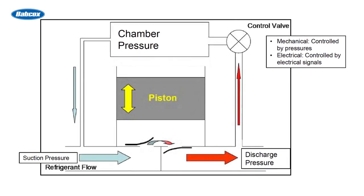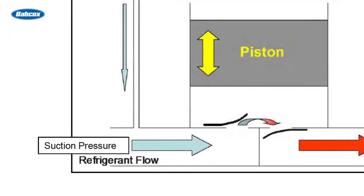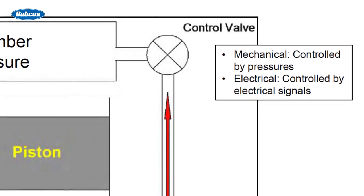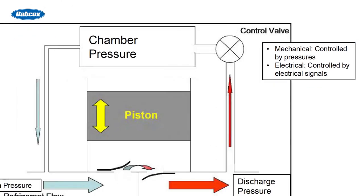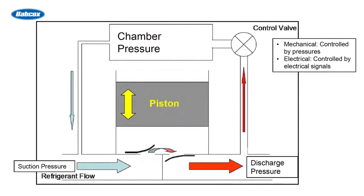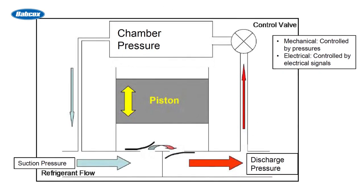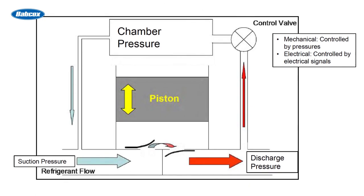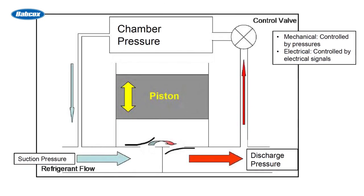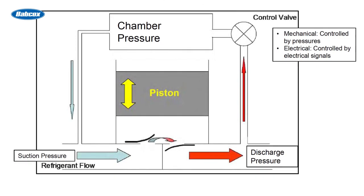The chamber pressure inside the compressor plays a key role in determining the displacement of refrigerant. Chamber pressure applies pressure to the piston tops, while suction pressure applies pressure to the piston bottoms. A control valve regulates the discharge gas channeled into the chamber, while a small bleed back to the suction side allows flow through the chamber. When the control valve is open, the chamber pressure equals the suction pressure, providing minimum displacement. When the control valve is closed, chamber pressure equals discharge pressure, providing maximum displacement. When the control valve is partially open, that's when you get variable displacement.